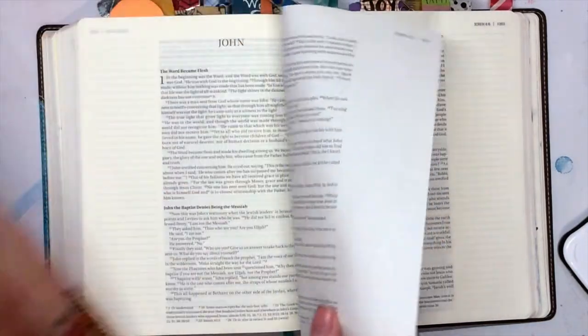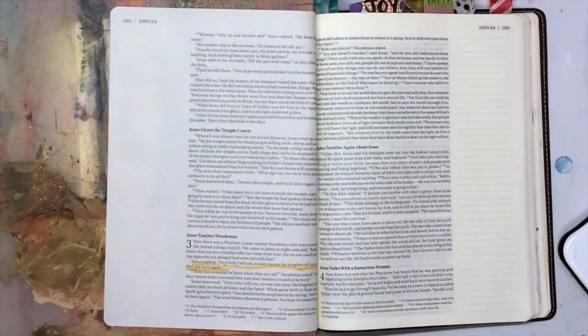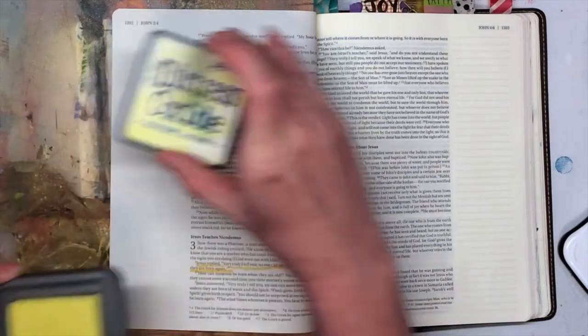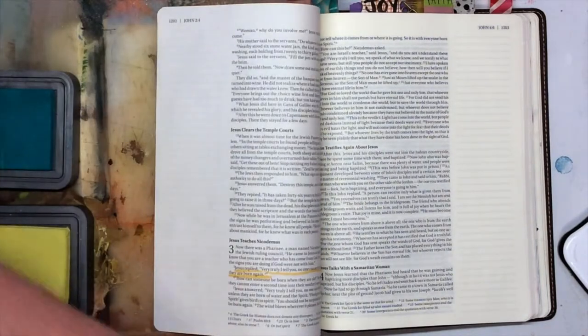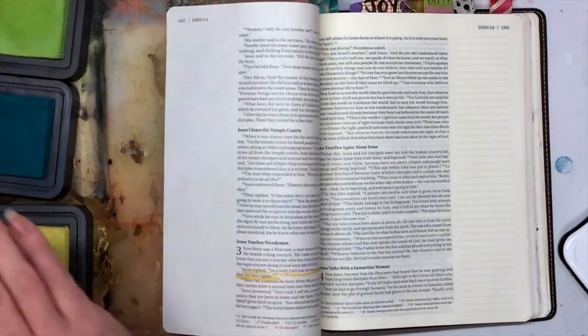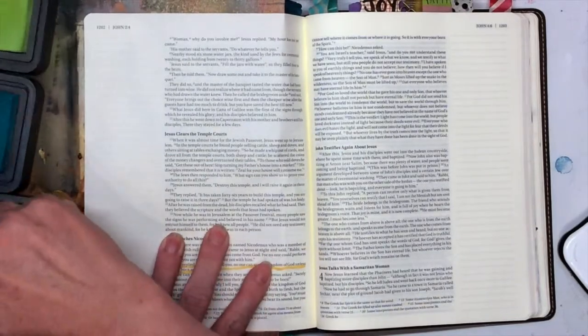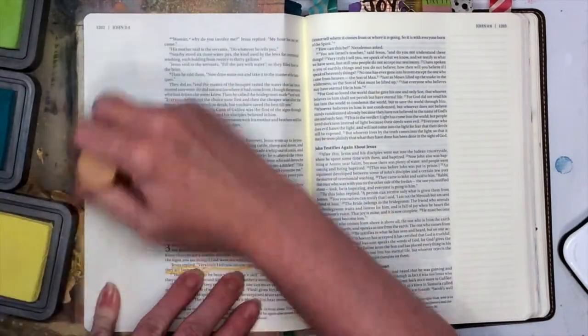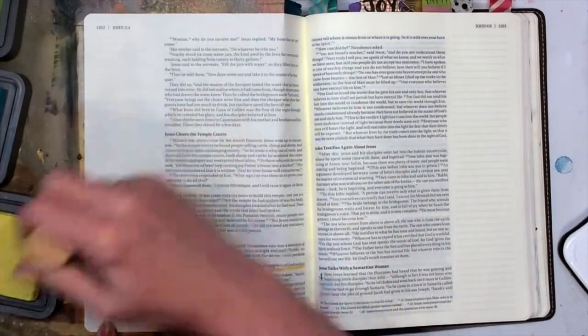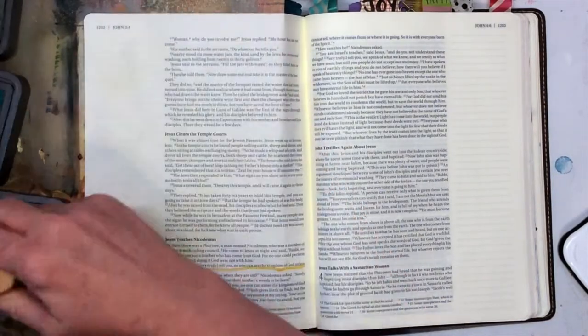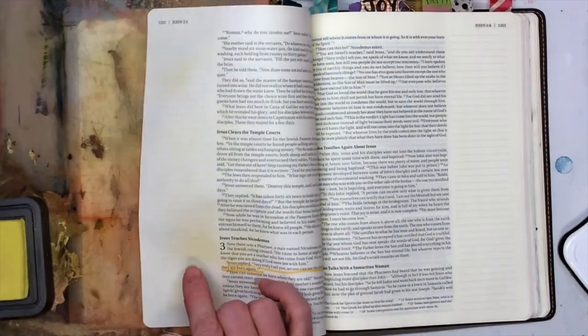I'm going to stick a dollar store placemat between my pages to protect them and give me a hard surface. I'll be using some Distress Oxide ink in Squeezed Lemonade, Peacock Feathers, and Twisted Citron with some blending brushes. I'm just going to dab the brush onto the ink and then brush it onto the page. I need to take the ink off because it's making too much noise.